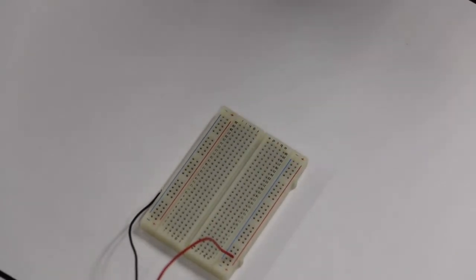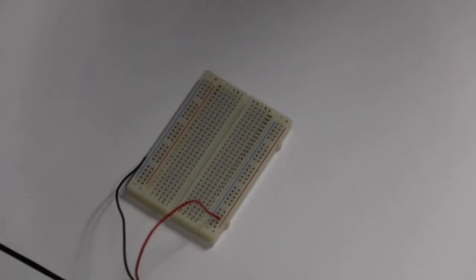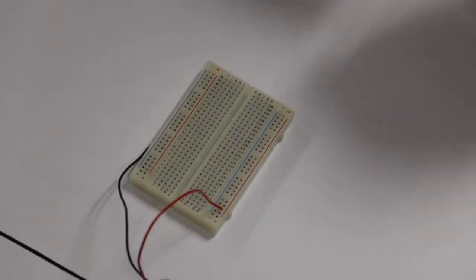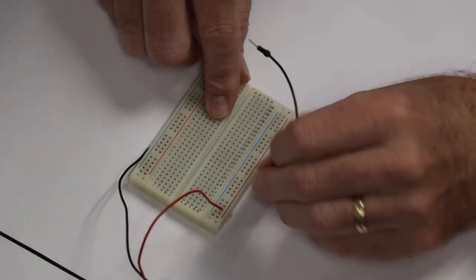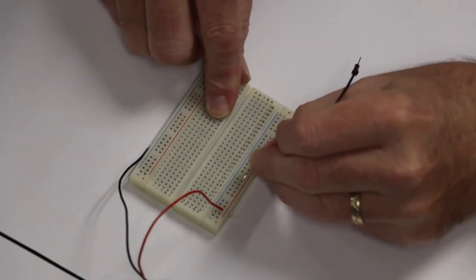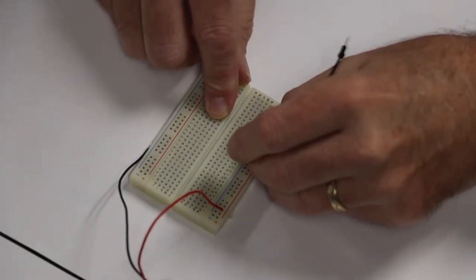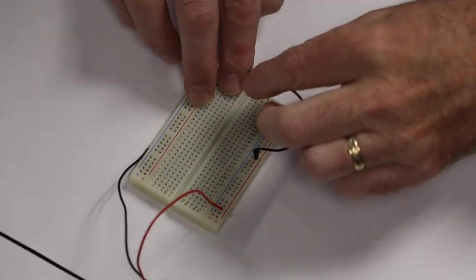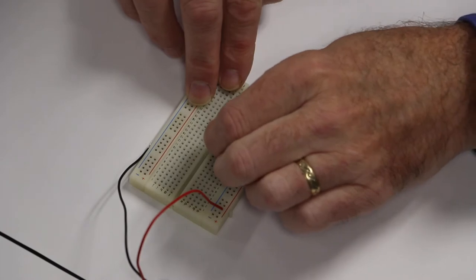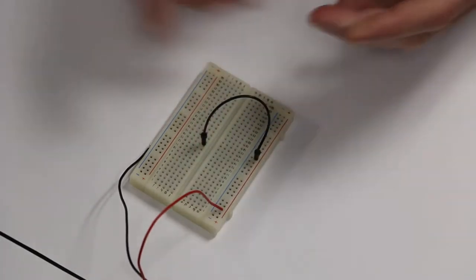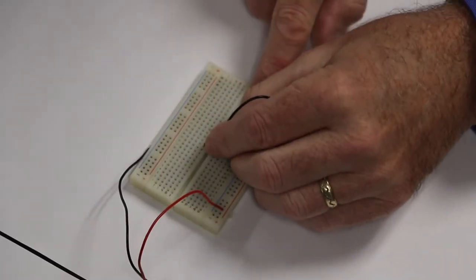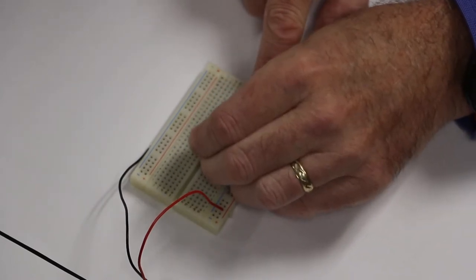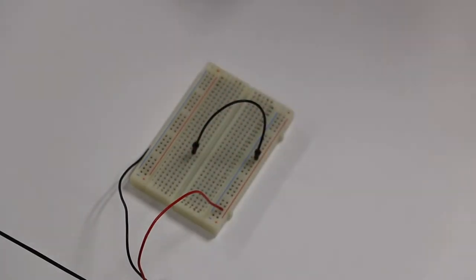Then what we're going to do is we're going to go from the battery to the resistor. So once again, we take our jumper and we can put it anywhere in the red stripe and then we're going to just put it anywhere on the side. It doesn't matter. You're just going to pick a spot and put it in.